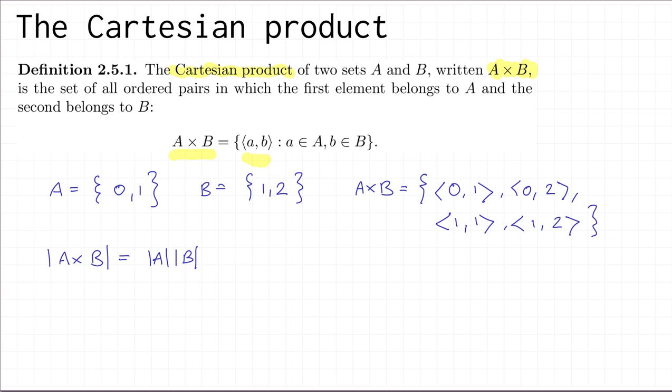All right, so just as we defined, or at least described, ordered triples and so on, we'll do the same for Cartesian products. So A × B × C for three sets A, B, and C would mean the set of all ordered triples (a,b,c) where a is in A and b is in B and c is in C, and so on.